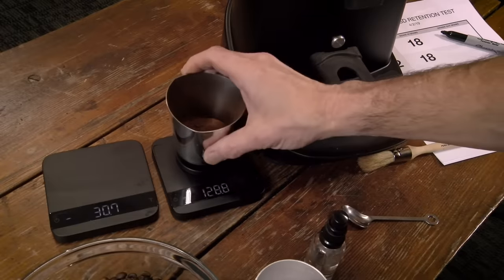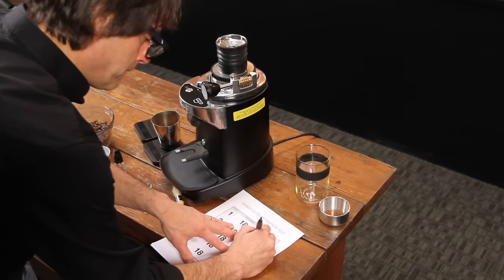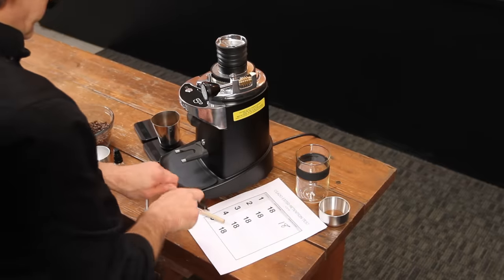Use the bellows to blow out residual coffee and sweep the chute. The two sprays of RDT can add between one and two tenths of a gram to the weight so it might not be unusual for the grinds out to be slightly over the 18 gram dose. I'll repeat the test five times.